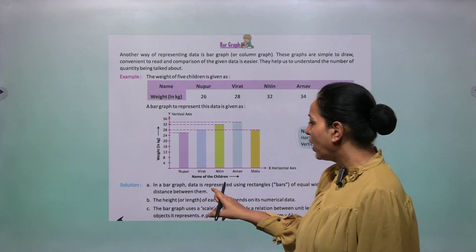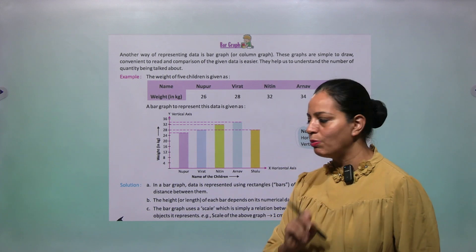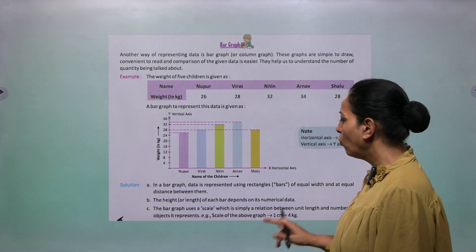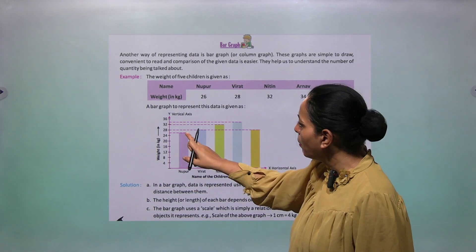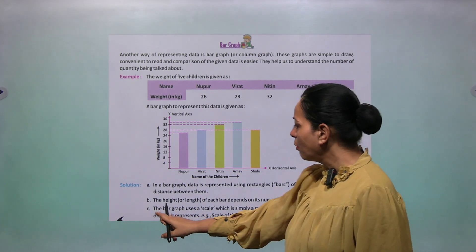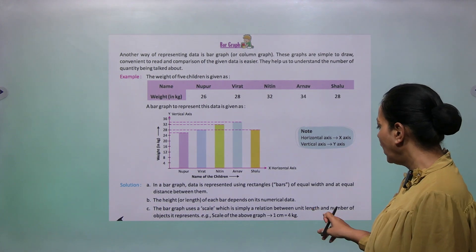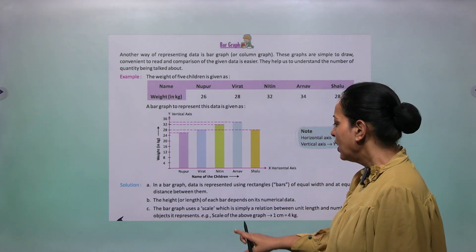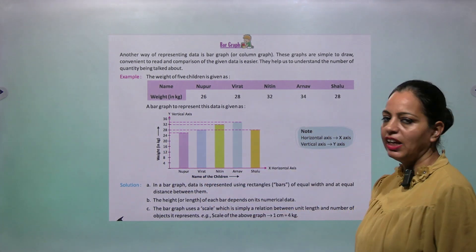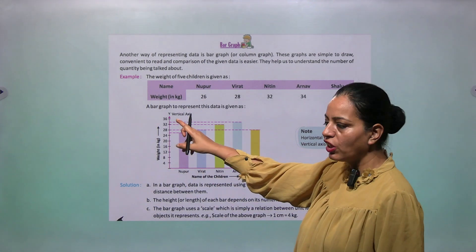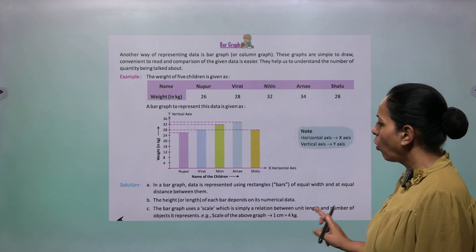The third point: the bar graph uses a scale, which is simply a relation between unit length and number of objects it represents. Scale of the above graph: here 1 centimeter equals to 4 kg. So 1 centimeter equals to 4 kg. So how they have drawn it?